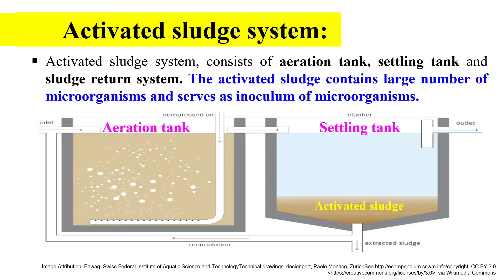After oxidation, the sewage is passed to the settling tank and left undisturbed for 2 to 3 hours. During this period, the sludge settles down to the bottom — this is the activated sludge which can be reused as an inoculum for the next batch of sewage. Most of the sludge is removed and some is returned to the aeration tank for the next round of treatment, while the maximum sludge gets utilized and only a small amount is carried forward.